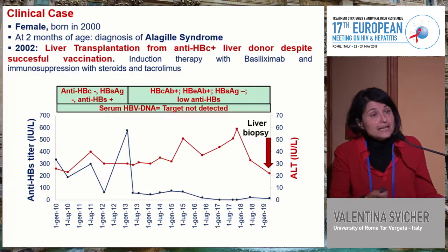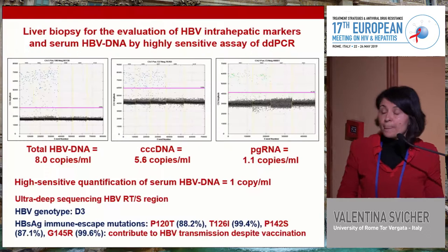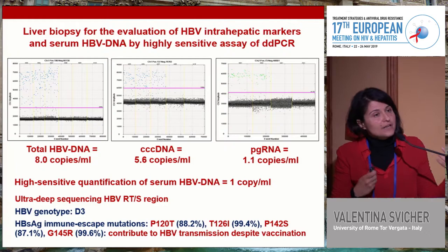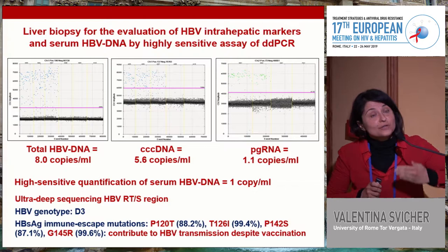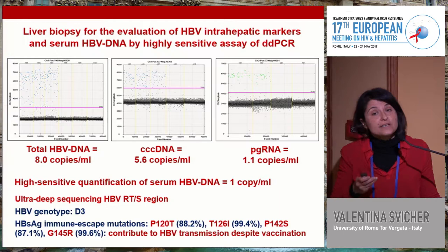We had the possibility to quantify cccDNA and pre-genomic RNA in liver biopsies, as well as serum HBV DNA by highly sensitive digital droplet PCR. We found the existence of a transcriptionally active cccDNA intra-hepatic reservoir, while serum HBV DNA was one copy per ml — indicating ongoing, albeit limited, viral replication that in the long run might contribute to liver inflammation and may represent a cofactor for onset of liver cancer.